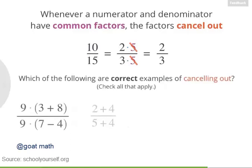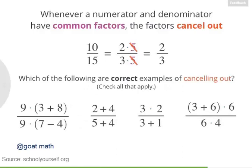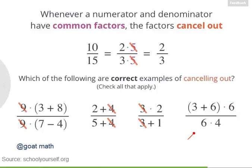Now, let's switch things up a little. Say your friend is doing some cancellation. Here are 4 fractions. Over here, your friend cancels the 9s. Over here, it's the 4s. Over here, it's the 3s. And in this fraction, it's the 6s. Not all of these are correct cancellations. Some of these actually change the value of the fraction. So, go ahead and identify which of these are correct examples of canceling out.